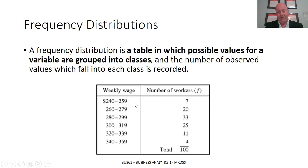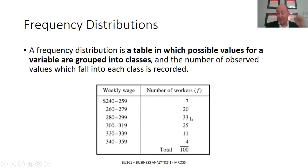So for example, we can see that in this fictitious company, we've got seven workers making between $240 and $259 a week. But most of our employees — when I say most, out of these six buckets of wage ranges — the greatest number of workers is in the range of $280 to $299. There are 33 workers, or about a third of your total workforce, in that range.